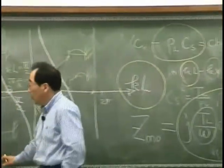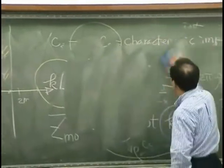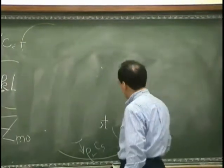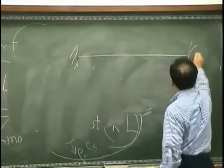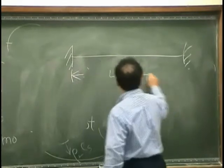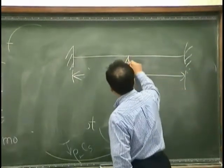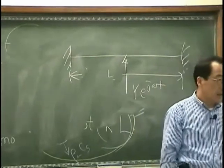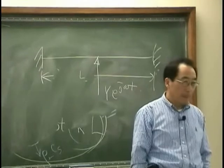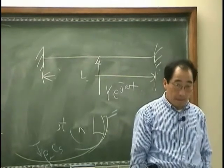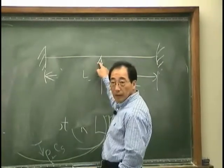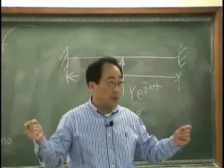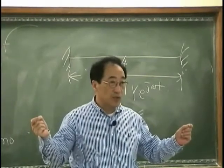What if I have a string that looks like this? I have, this is L, and I am excited over here. What would be the driving point impedance look like? We know that this can be regarded as two strings that has length L over 2.